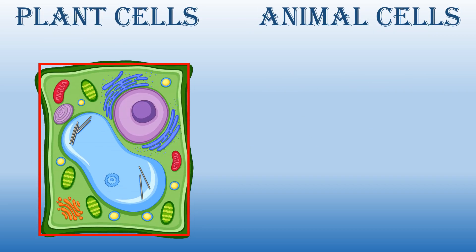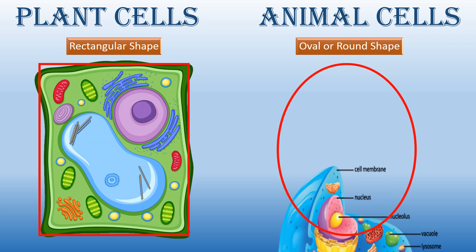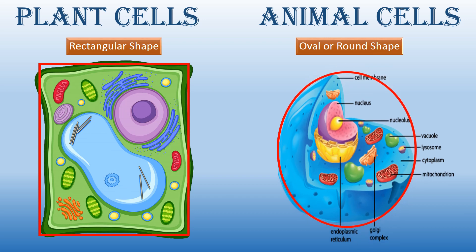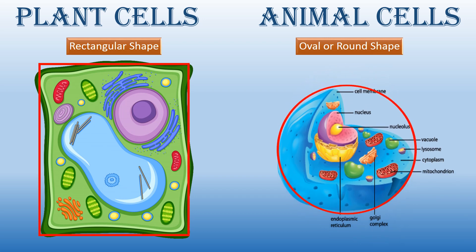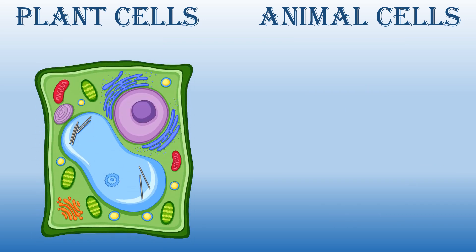Have you seen this plant cell? It is rectangular in shape, whereas animal cells are of various types, but usually they are oval or round in shape.